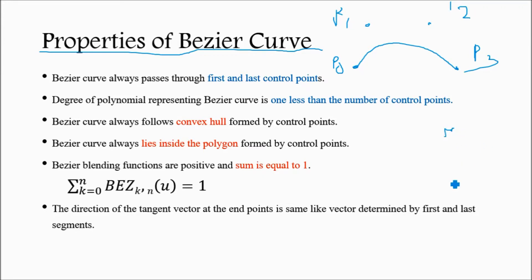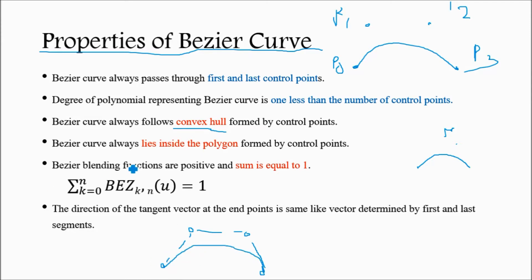If we have three control points, the Bezier curve will have degree two (quadratic). Third, the Bezier curve always follows the convex hull formed by the control points — connecting the control points forms the convex hull, and the curve will not go outside it. Fourth, the Bezier curve lies inside the polygon formed by the control points. Fifth, the Bezier blending functions are positive and their sum equals one: summation from k=0 to n of Bezier(k,n)(u) equals 1.